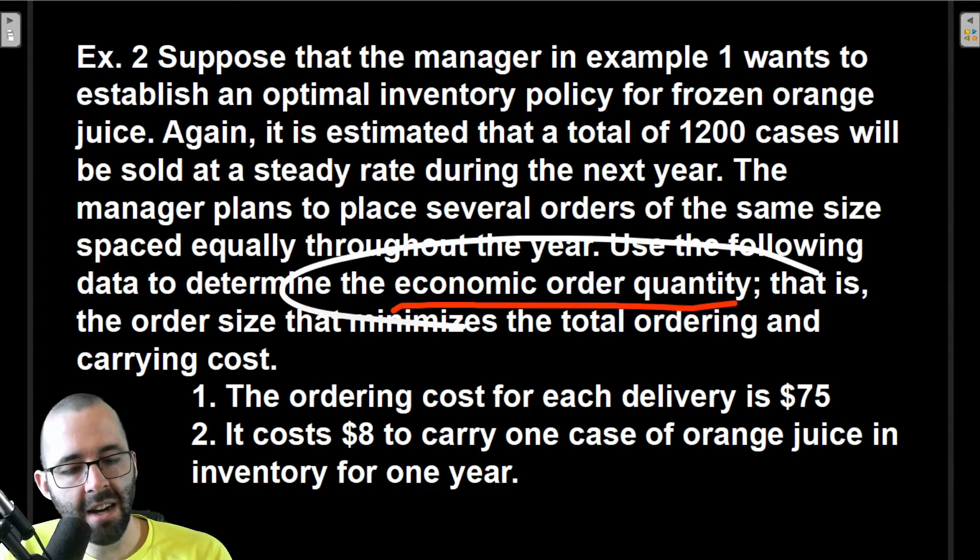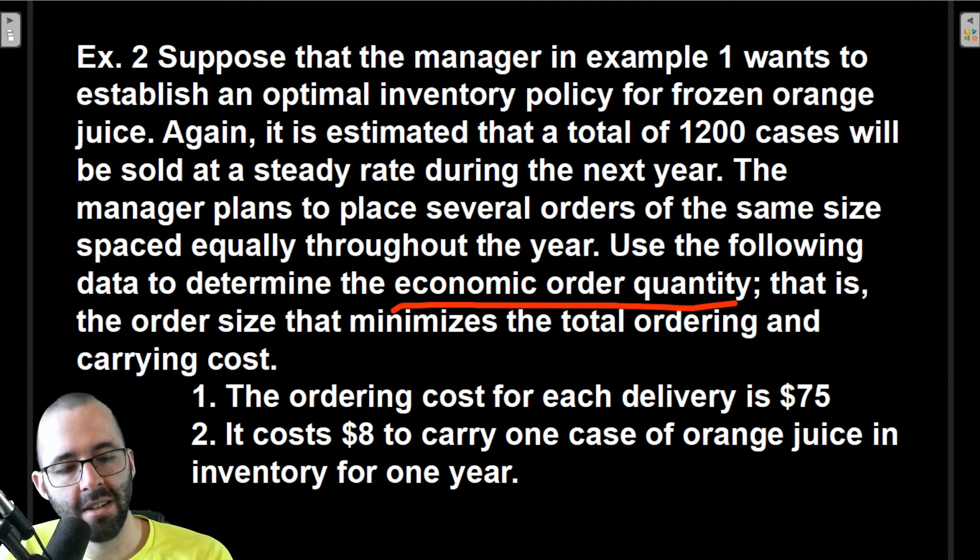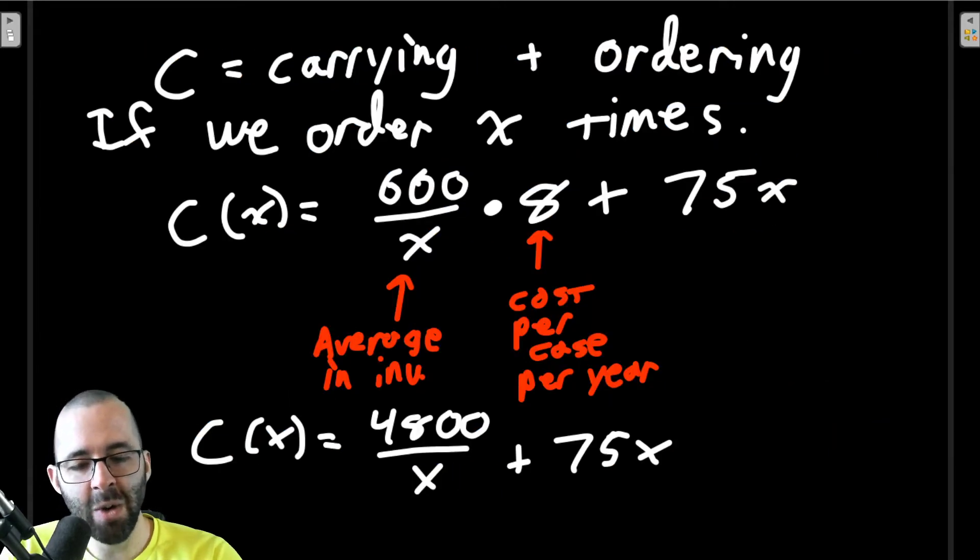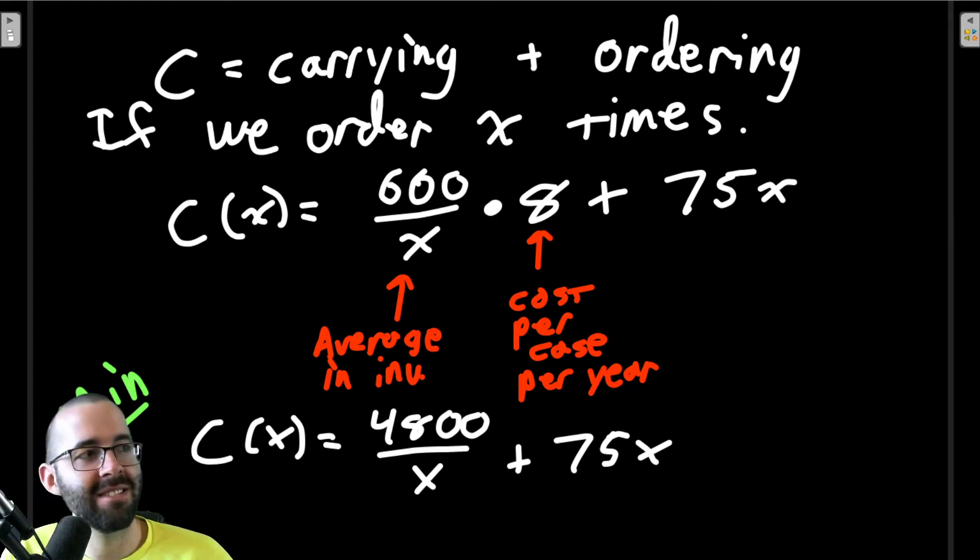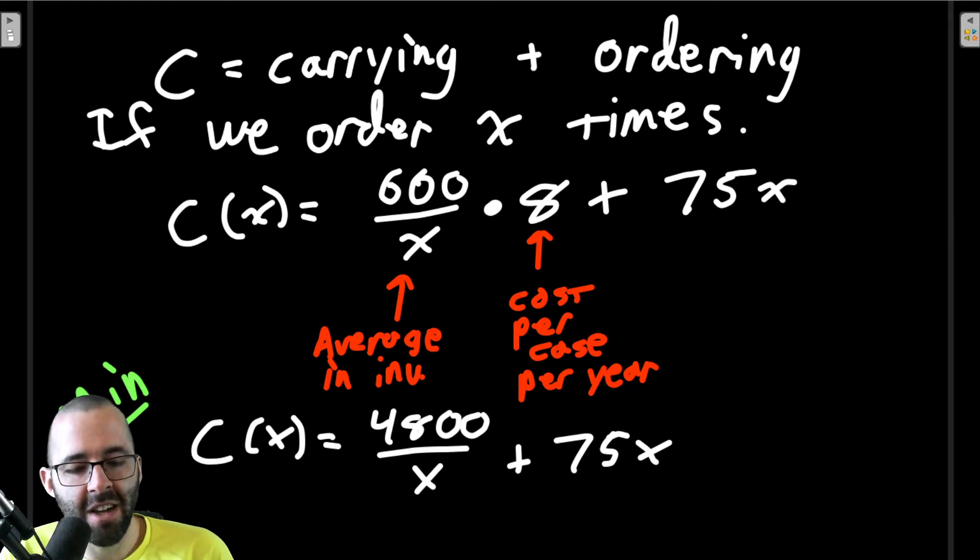Now what were we asked to find? Determine the economic order quantity. We want an order size that minimizes the total ordering and carrying cost. We want to minimize a cost function. We've got an optimization problem on our hands.